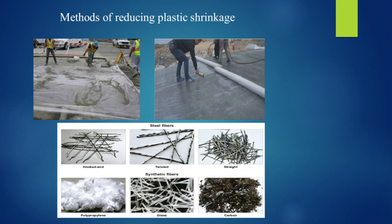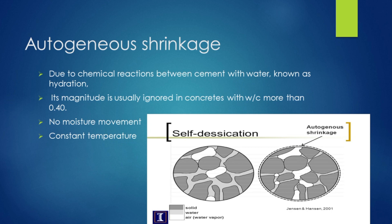Autogenous shrinkage is significant in high-strength concrete, where the water-to-cement ratio is less than 0.4. The water is not evaporated but consumed in hydration at a constant temperature. As the hydration reaction continues from the plastic stage, there is a loss of water, and this internal water consumption leads to autogenous shrinkage. It increases more when the w/c ratio is less than 0.4.